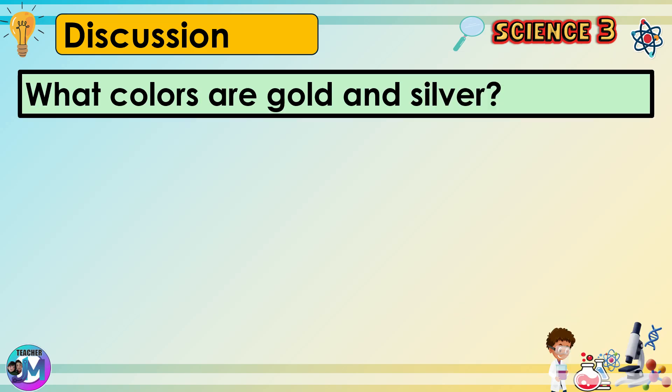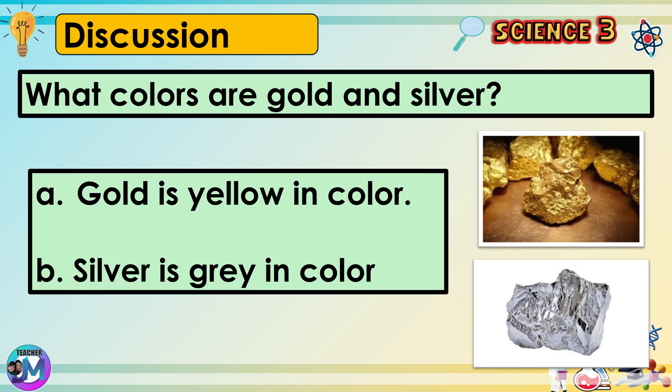What colors are gold and silver? Gold is yellow in color, while silver is gray in color.